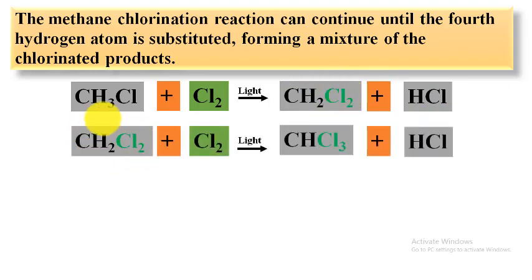Again, this dichloromethane reacts more with Cl2 under sunlight to drop an H atom and add a Cl atom. It becomes CHCl3 plus HCl. This is called trichloromethane.